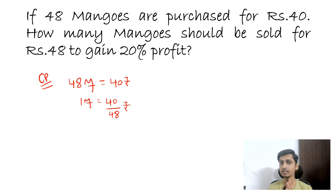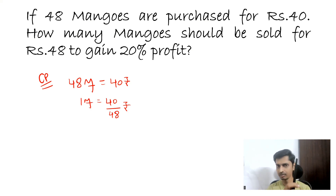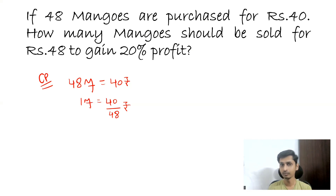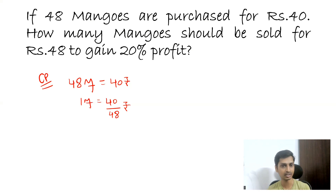Now, what is cost price equivalent to? Cost price is always 100 percent. For example, if I purchased this pen, the cost price of this pen is 100 percent. So cost price is always 100 percent. Now you want to sell this mango with 20 percent profit. So if cost price of one mango is 40 by 48 rupees, for how many percent do you have to sell this one mango? 120 percent — then only you get a 20 percent extra profit. With cost price at 100 percent and you want to get 20 percent extra, 120 percent would be your selling price.